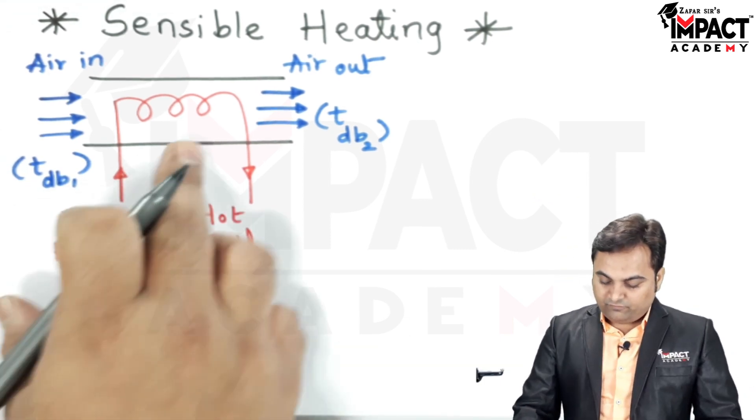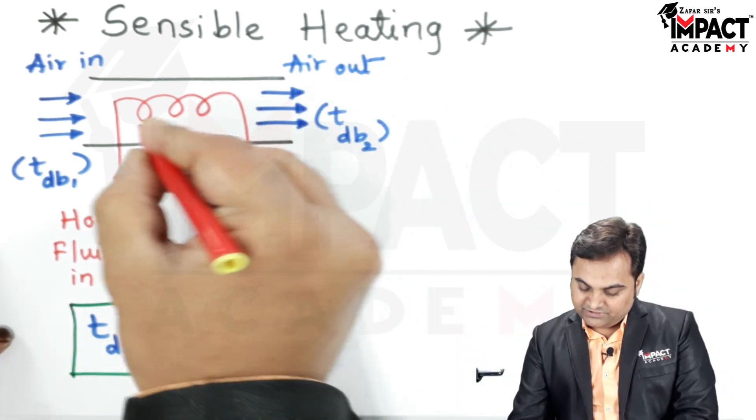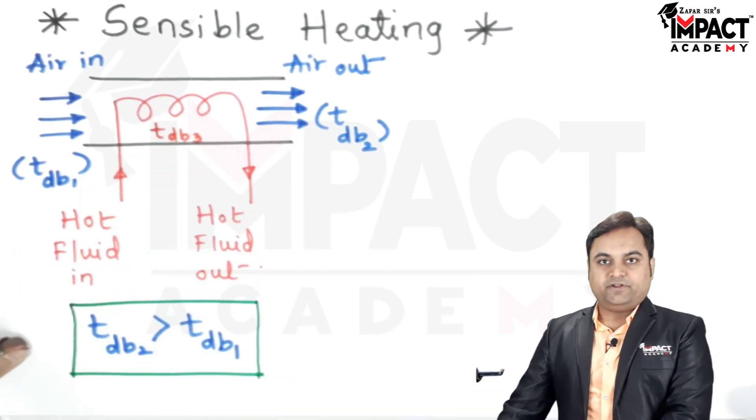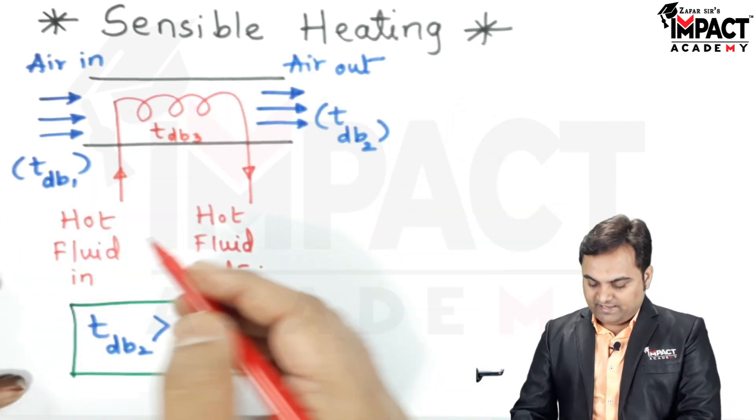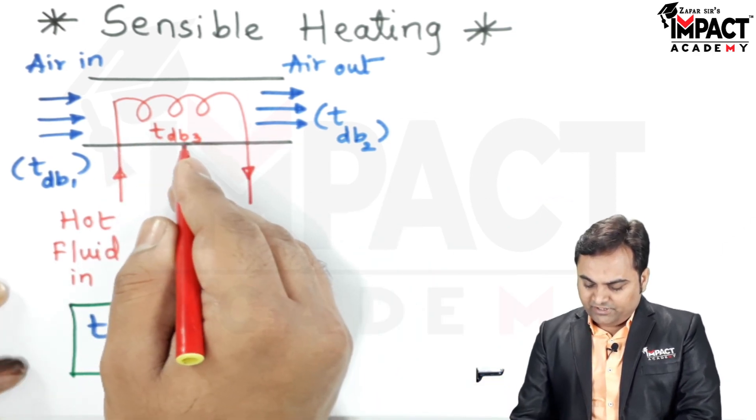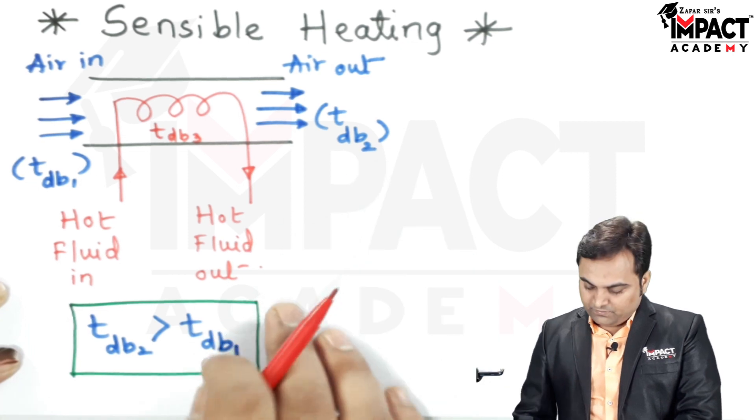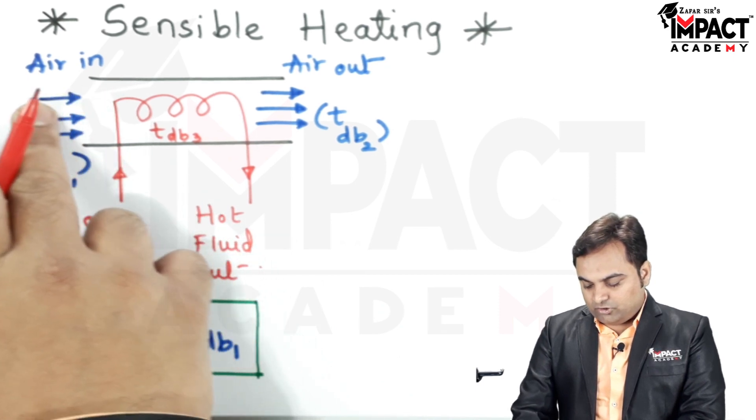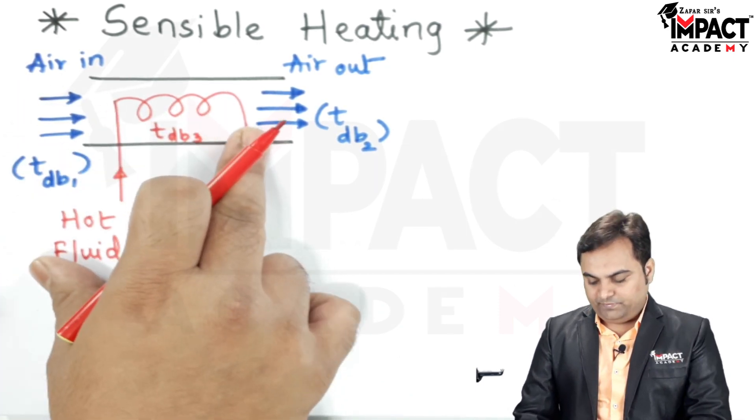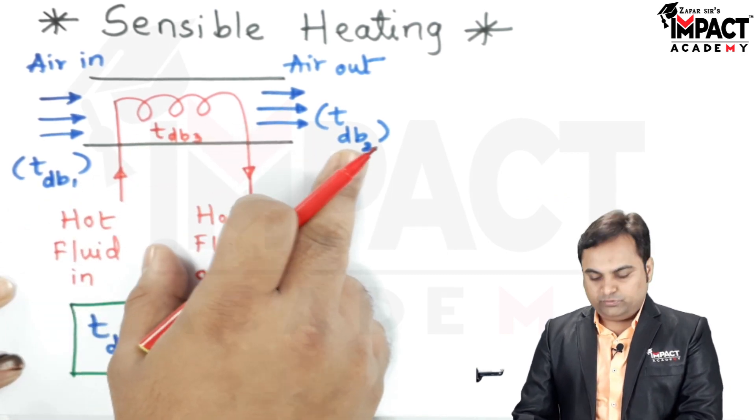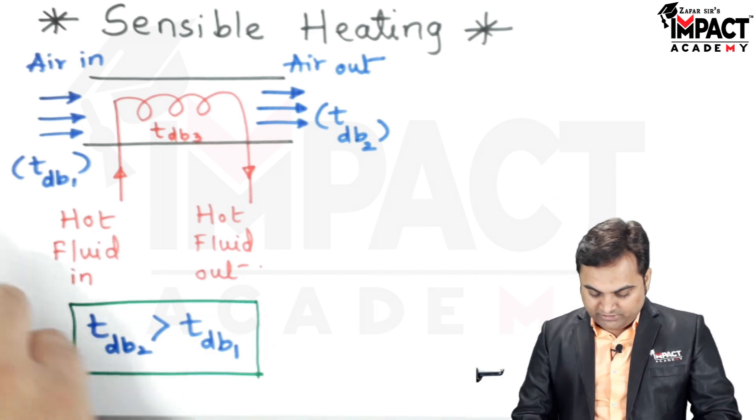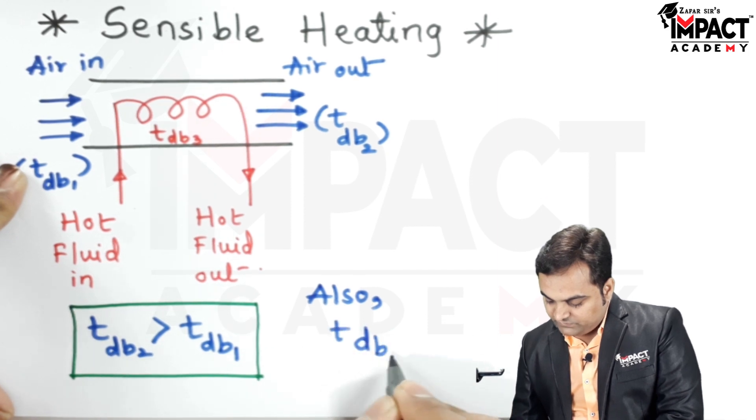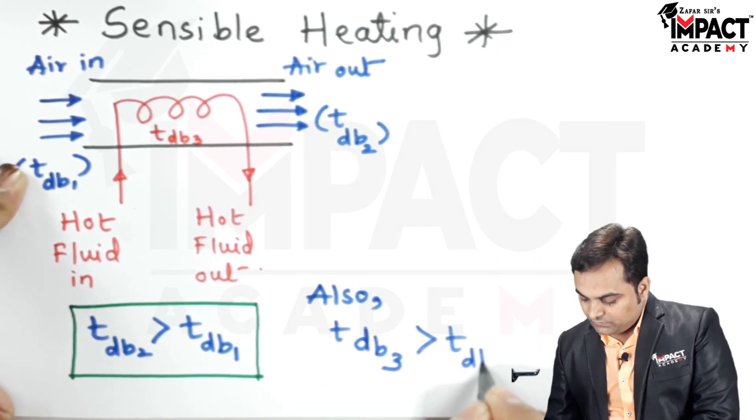And here for this heater I am giving the notation that its temperature is t_db3, the dry bulb temperature for this electric heater or any kind of heater we can have. Now t_db3 will be greater than t_db2 because the temperature of the heating coil would be the highest. That is since all the air which is passing over the heater would not be coming in contact, so obviously the temperature t_db2 would be less than the temperature of the heating coil. So here I can say that also t_db3 would be greater than t_db2.